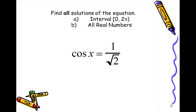The question here is: find all solutions of the equation. There's an infinite number of angles whose cosine is 1 over square root of 2. In order to come up with an algebraic representation of all the solutions, we're first going to identify the angles between 0 and 2 pi, and then we're going to add periods — intervals — onto that.